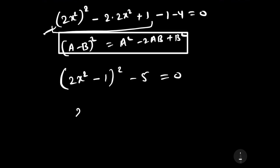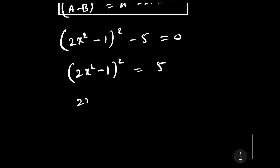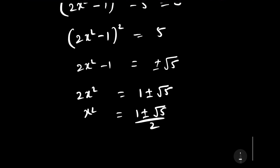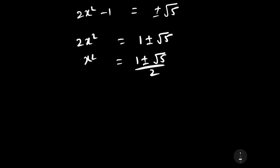This gives (2x squared minus 1) squared equals 5, so 2x squared minus 1 equals plus or minus square root 5. Therefore 2x squared equals 1 plus or minus square root 5, and x squared equals (1 plus or minus square root 5) divided by 2. Again we discard (1 minus square root 5) divided by 2 since it is negative.